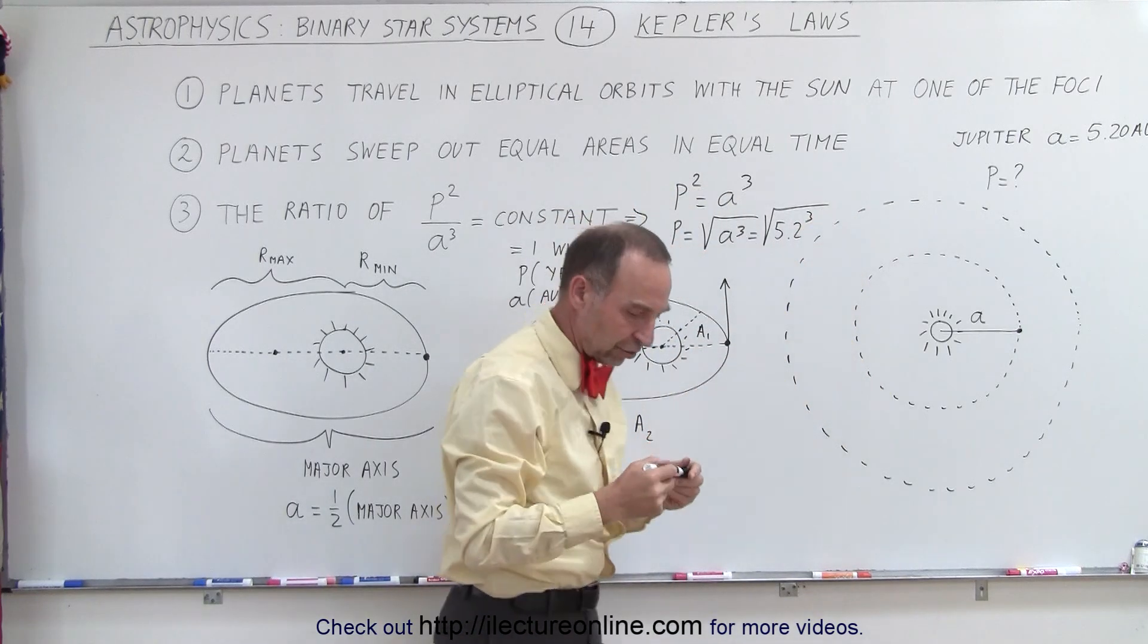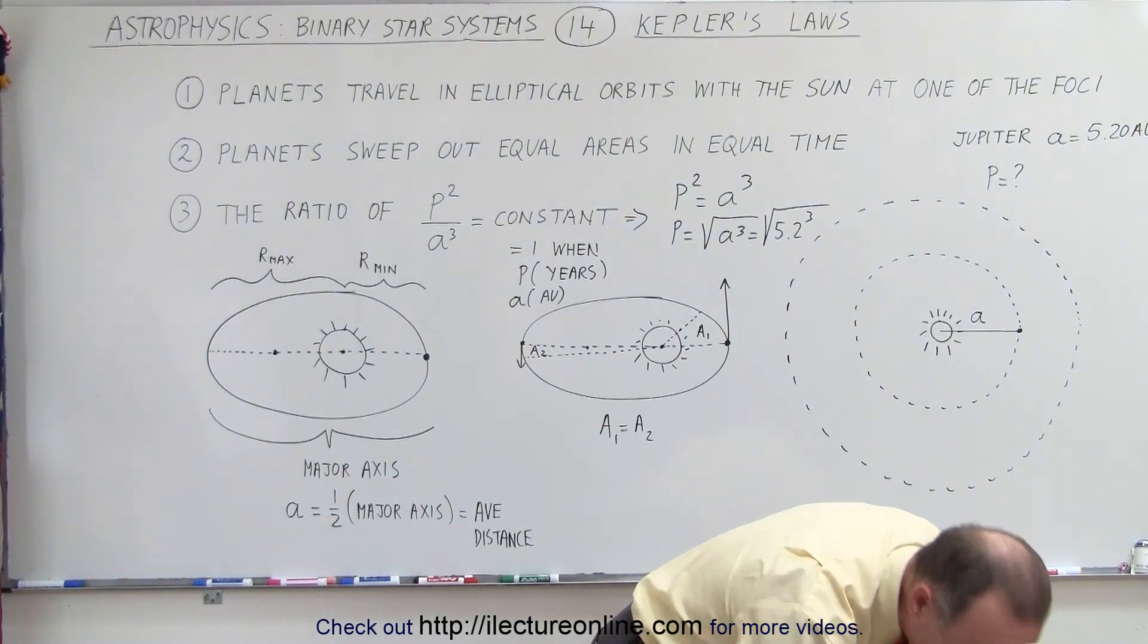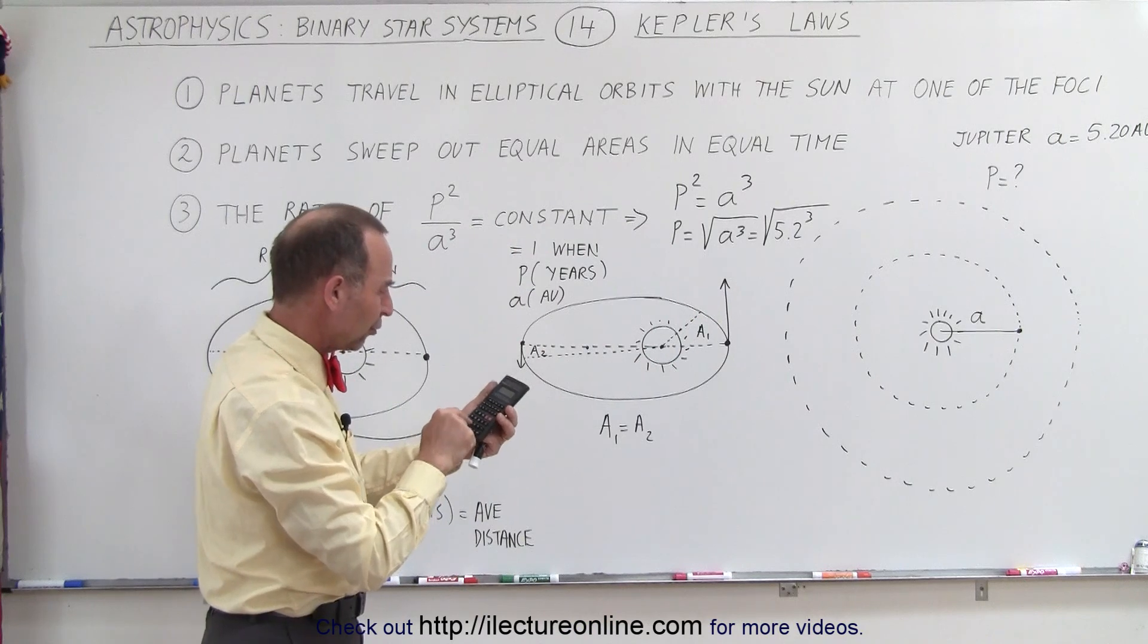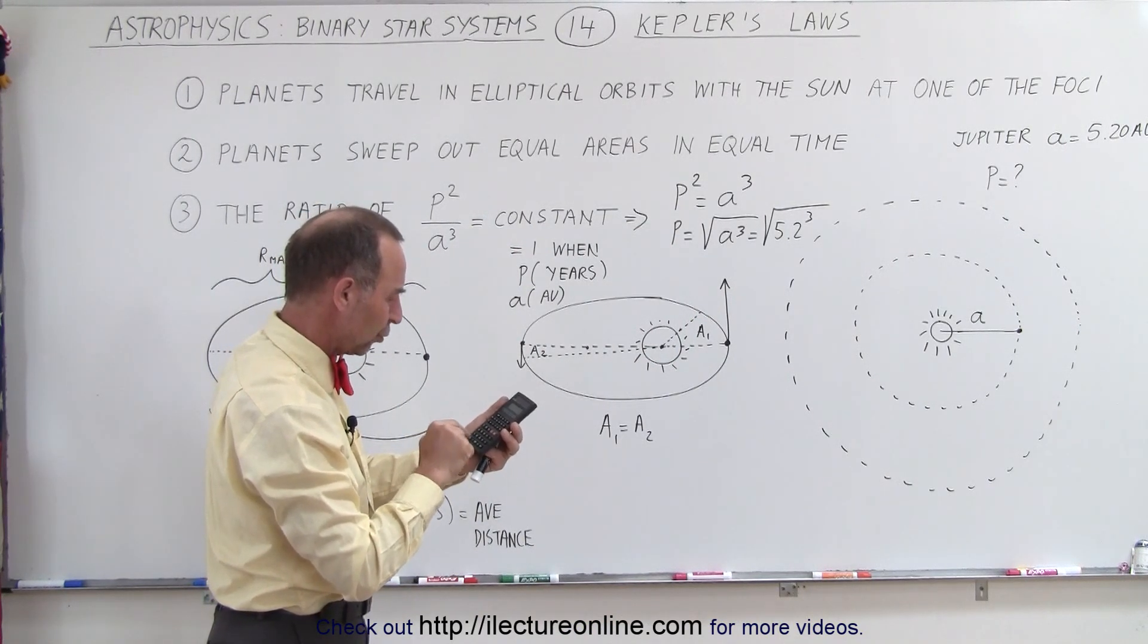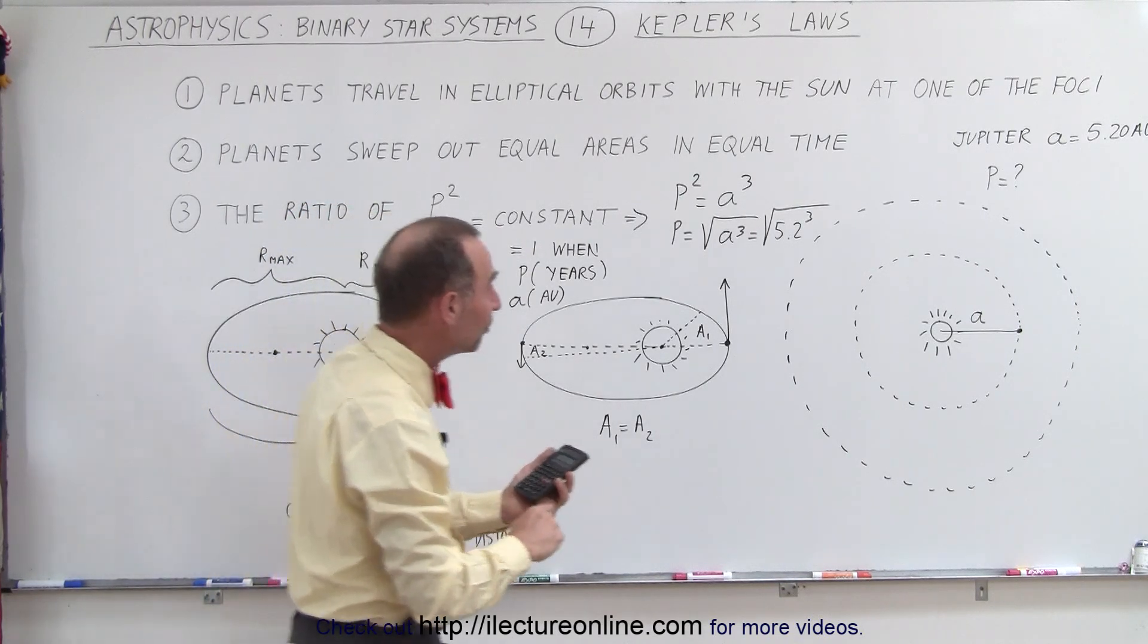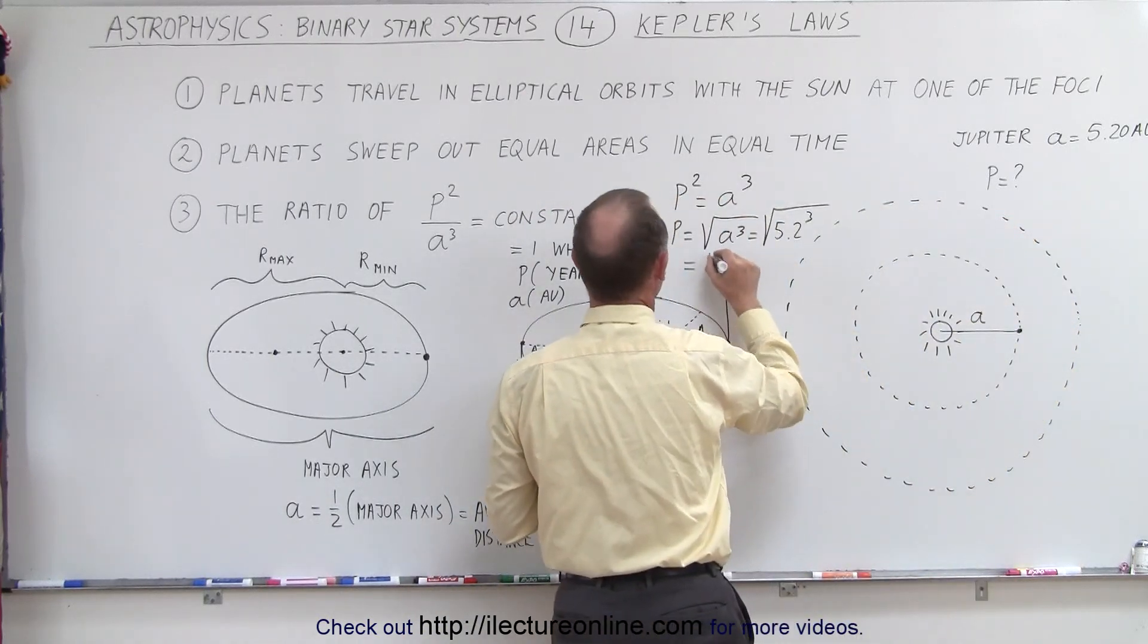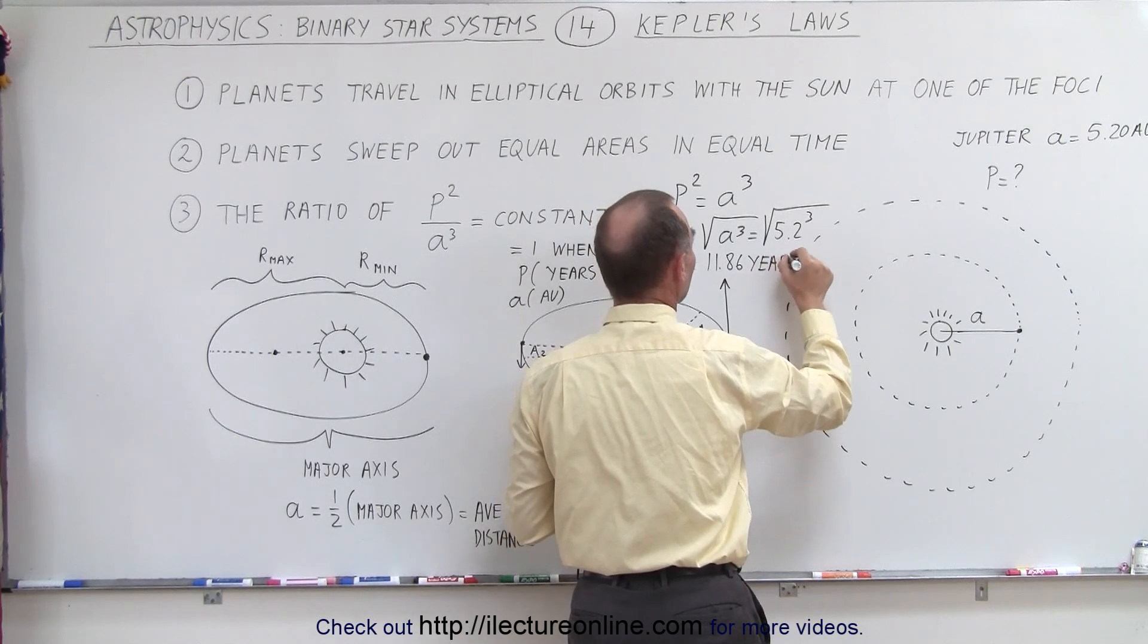And then using our calculator, if I can find it. There it is. Sometimes it's hidden behind some papers. So here we go. 5.2 raised to the third power, 5.2 to the third power equals. And then we take the square root of that and we get 11.86 years. So the period would be equal to 11.86 years, which is really close to the actual period of Jupiter.